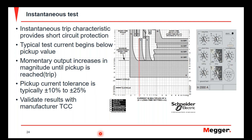The instantaneous test is a little different from the previous two. It's a pickup test performed using a momentary current output. We start below our pickup point for the instantaneous setting, then pulse current in increasing magnitudes until the breaker trips. That is the pickup point, and we record the current value at which the breaker tripped. Typically, that current value is within plus or minus 10% of the pickup value for many electronic trip unit breakers. For older-style molded-case breakers, that tolerance could be as much as plus or minus 25%.